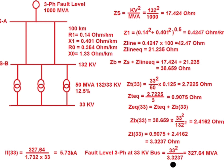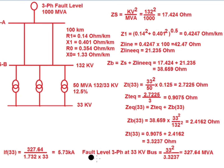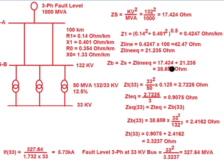The three-phase fault level at the 33 kV bus is: Fault MVA = kV² / Zeq = 33² / 3.3237 = 327.64 MVA. From this, the three-phase fault current at the 33 kV bus is: IF33 = Fault MVA / (√3 × 33) = 5.73 kilo-ampere. This is how we calculate the three-phase symmetrical fault at the 33 kV bus when the fault level at the source substation is known.